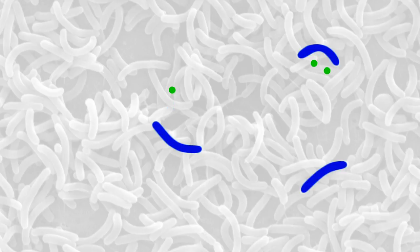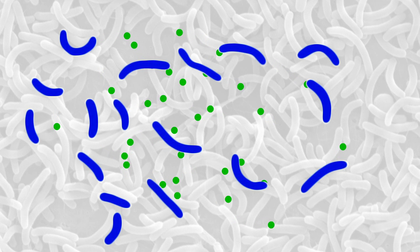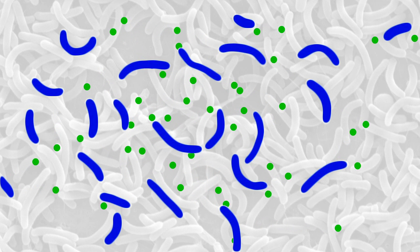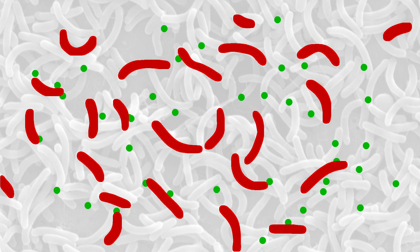The molecules build up outside of the cells in proportion to the cell number that's present. When the molecules hit a certain threshold level, it tells the bacteria they have neighbors around, and then they all change their behavior in unison.